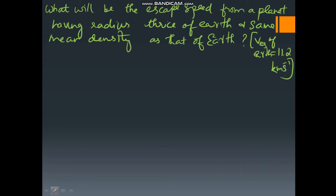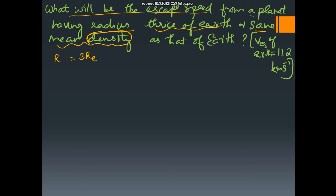Now let us see this numerical: what will be the escape speed from a planet having radius three times that of the Earth, with the same mean density? When a quantity like density is given as the same, we must bring that term into the formula. We know v_escape = √(2GM/r), and since density is given, we substitute: mass = density × volume, where volume = (4/3)πr³.